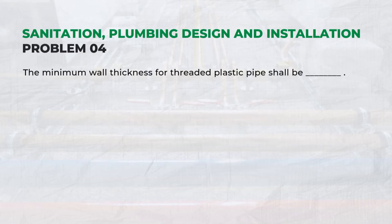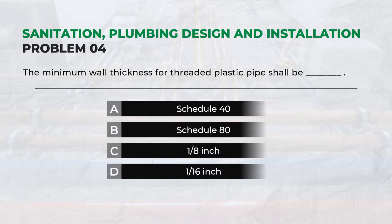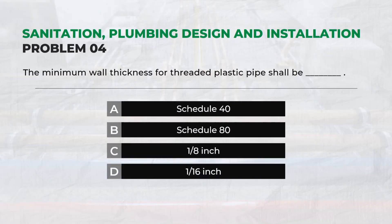The minimum wall thickness for threaded plastic pipe shall be — Answer B: Schedule 80.